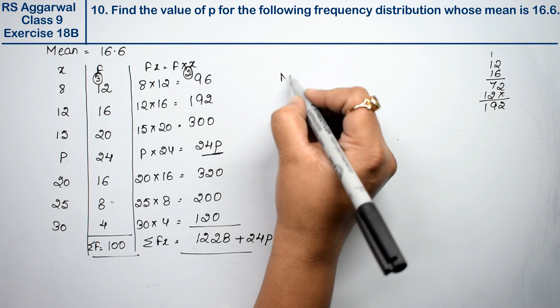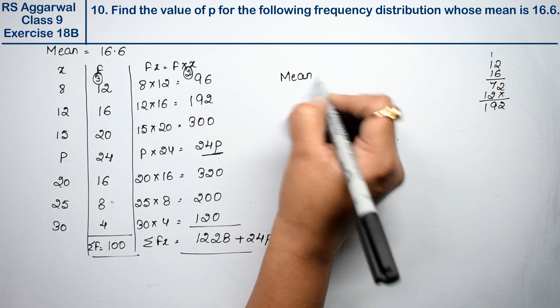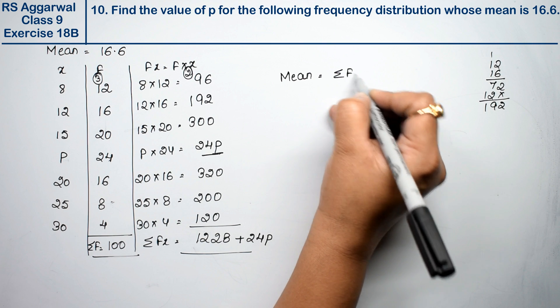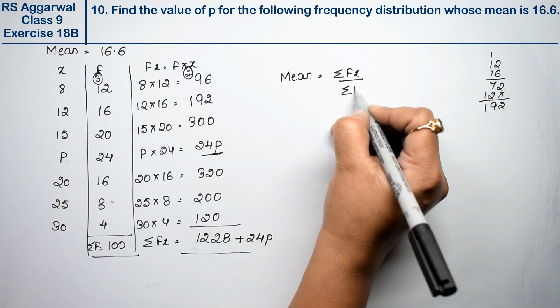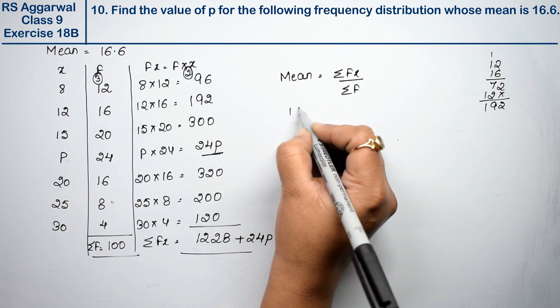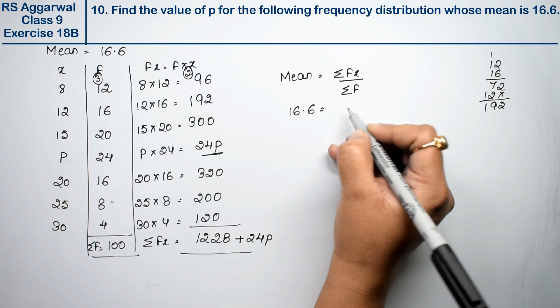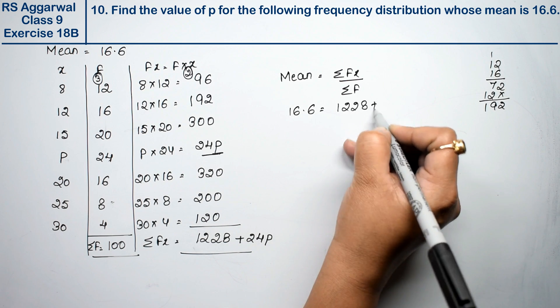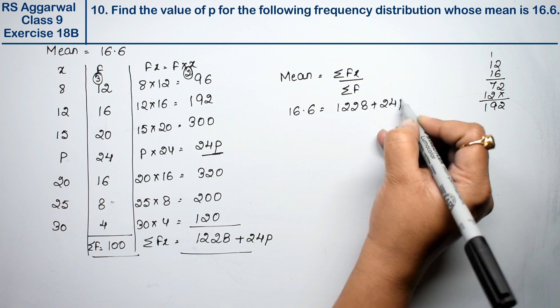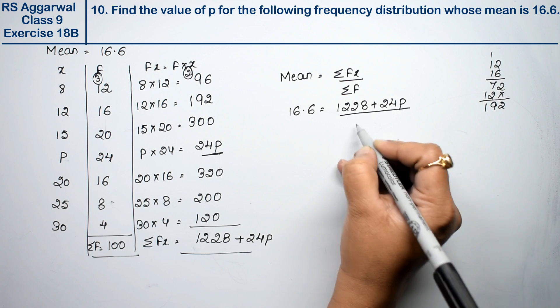The mean formula is sigma fx divided by sigma f. So we have 16.6 equals (1228 plus 24p) divided by 100.